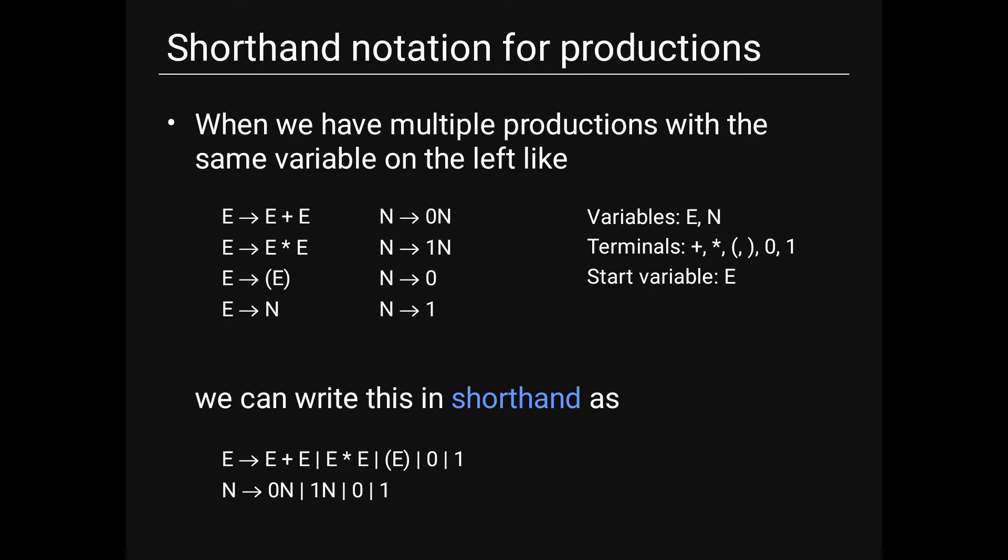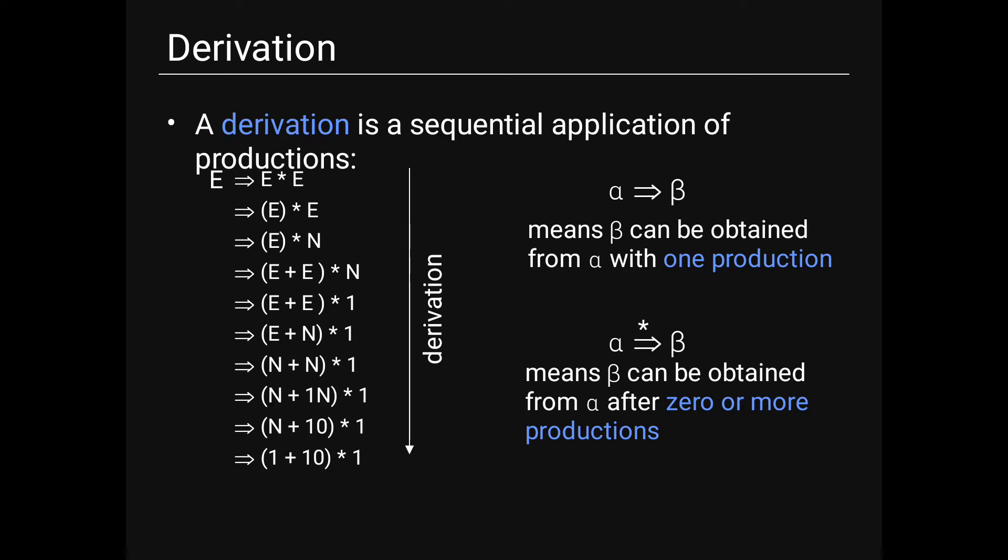Derivation is the sequential application of productions. For example: E → E×E → (E)×E → (E+E)×E → (E+E)×N → (N+E)×N. We write α → β to mean β is obtained from α in one production step, and α →* β to mean β is obtained from α in zero or more production steps.